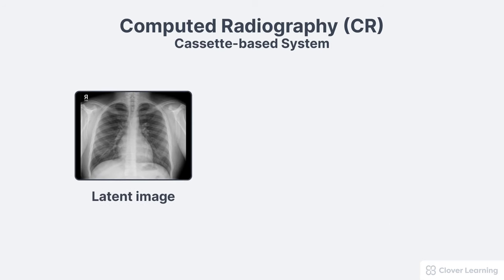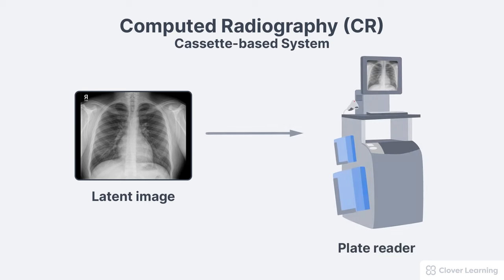Just like with film imaging, this initial exposure results in only what we will call a latent image and still needs to be processed into a usable radiograph. In computed radiography, this processing is done by a plate reader that will be discussed in another video.